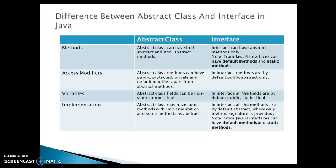When we talk about the difference between abstract class and interfaces in Java, you can see there are three columns: the first column lists the different categories, the second is abstract class, and the third is interfaces. With respect to methods, abstract class can have both abstract as well as non-abstract methods — non-abstract meaning methods defined with a body. But an interface can have abstract methods only. However, from Java 8, interfaces can have default methods and static methods as well.